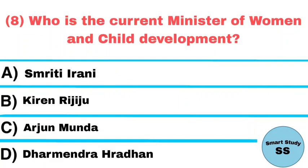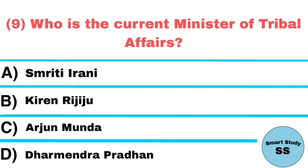Question number 8: Who is the current minister of Women and Child Development? Answer: Smriti Irani. Question number 9: Who is the current minister of Tribal Affairs? Answer: Arjun Munda.